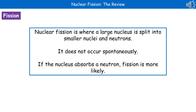When we talk about the process of nuclear fission, we're talking about where a large nucleus is being split into smaller nuclei and neutrons. This isn't something that occurs spontaneously, but if the nucleus absorbs a neutron, then fission is more likely to occur.